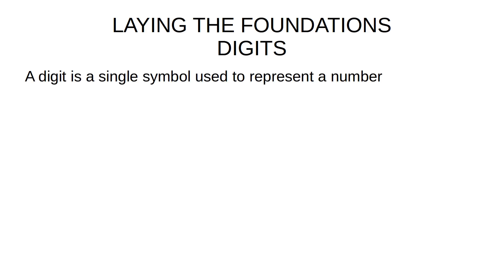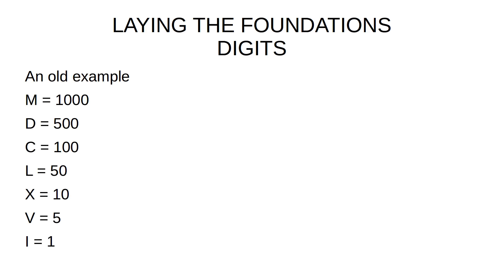So let's start with digits. How do we think of a digit? A digit is a single symbol used to represent a number. Going back to the days of the Roman Republic and the Roman Empire, we have M for 1000, D for 500, C for 100, L for 50, and so on — the famous Roman numerals.